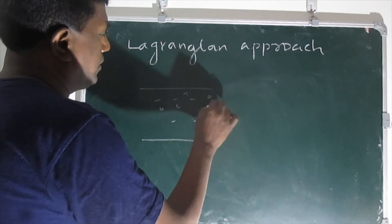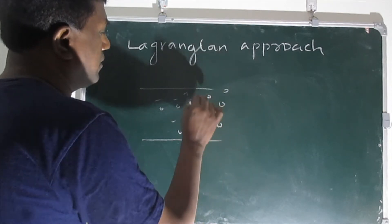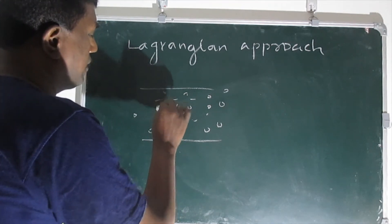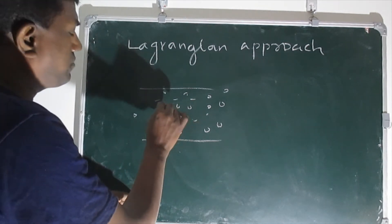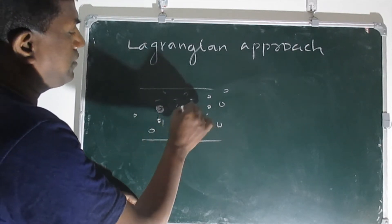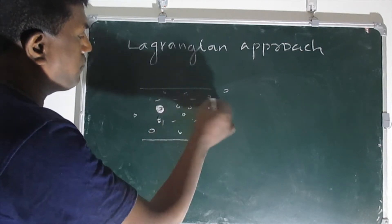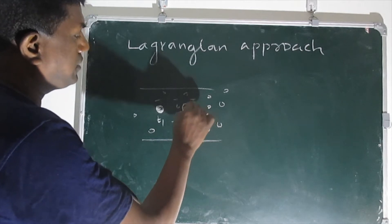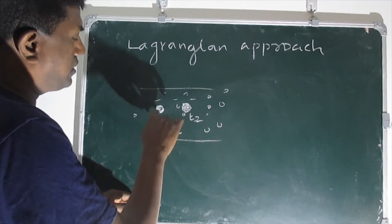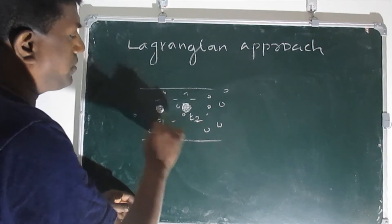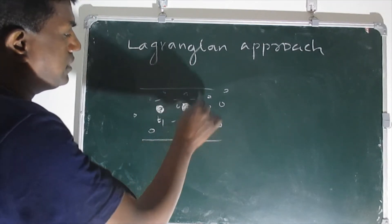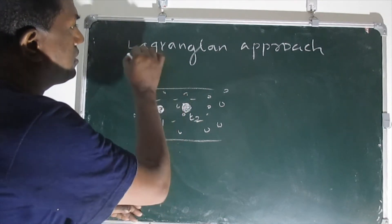Taking only one fluid particle and following it: suppose this particle is at time t1 at one position. After some time the particle moves to another position at time t2. Because it is changing from one position to another, its properties will also be changing. We are tracking those properties and monitoring the changes in the fluid property. This is what we call the Lagrangian approach.